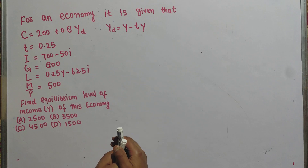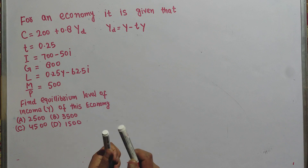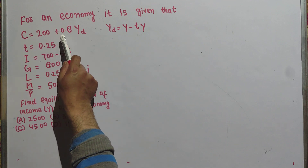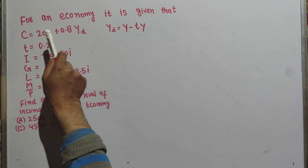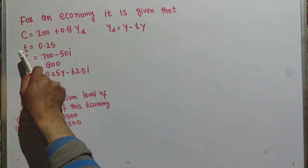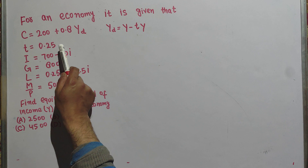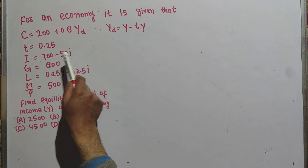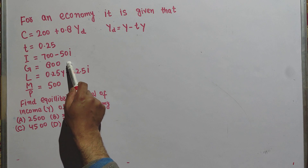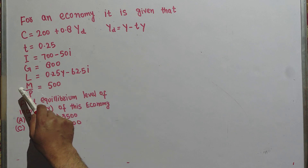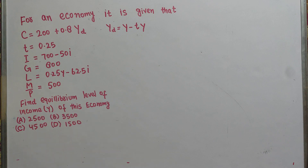Let us solve a question on how to find out the equilibrium level of income from the data of an economy. The question gives us: C = 200 + 0.8·Y_d, where C is the consumption function and Y_d is the disposable income. T (marginal tax rate) = 0.25, Investment = 700 − 50i, Government expenditure = 800, Demand for money = 0.25Y − 62.5i, and Real money supply = 500. We need to find the equilibrium level of income.